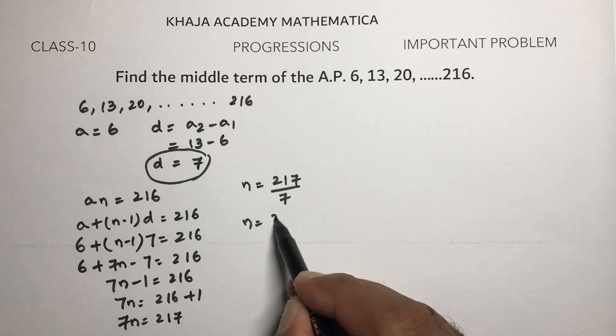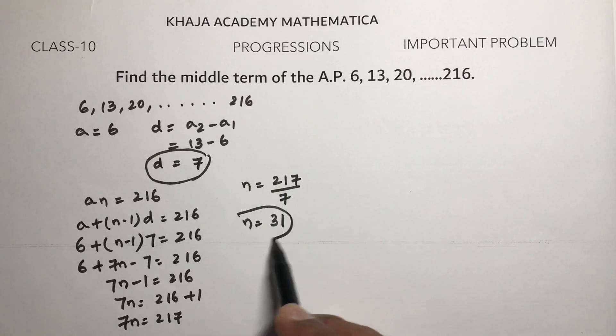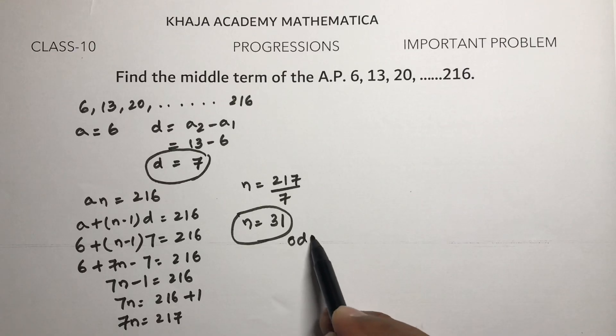Dividing, we get n = 31. So the number of terms is 31, which is odd.